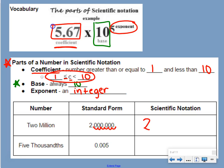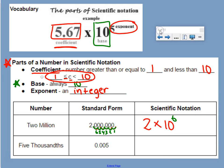That coefficient is between 1 and 10, times 10 — always 10. Our exponent is the number of times we had to move the decimal point. We move the decimal point six times, so our exponent is 6. In scientific notation, that is 2 times 10 to the sixth power.